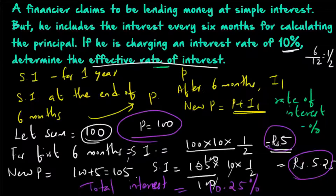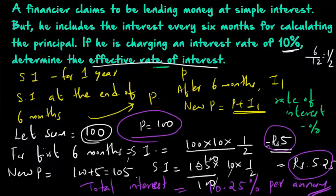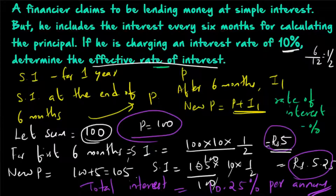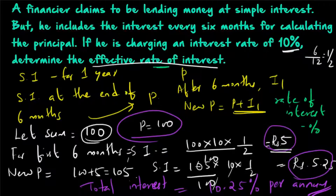So our total interest will be the sum of these two interests. Because we have calculated it for a sum of 100, our interest will be equal to 5 plus 5.25, which is equal to 10.25. So the effective rate of interest is 10.25% per annum.